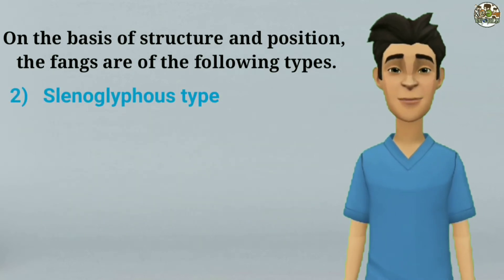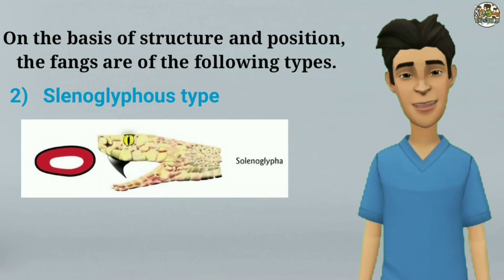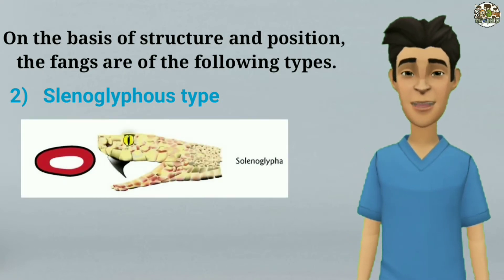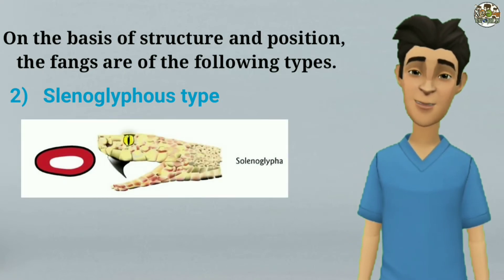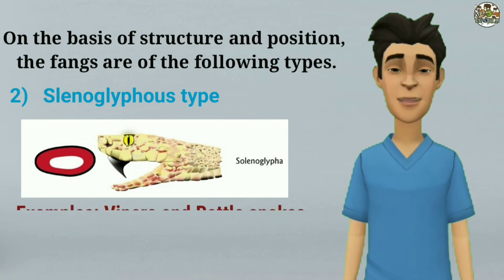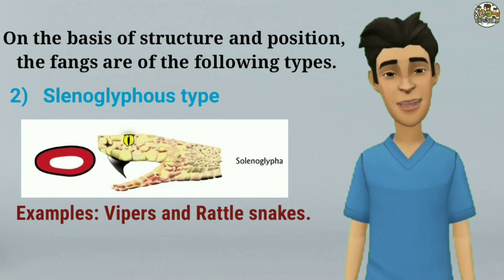Stenoglyphs type: the fangs are movable and turned inside. The poison canal runs through the fang and opens at the tip. Examples include vipers and rattlesnakes.